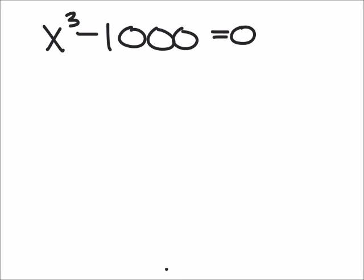Alright, well we can solve this one. So 1000 as it turns out is a perfect cube, it is a perfect cube of 10. In other words, if we took 10 and cubed it we'd get that 1000.